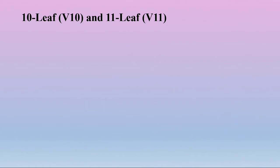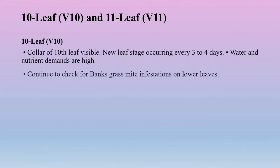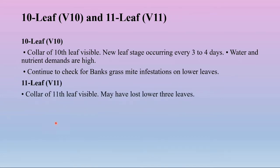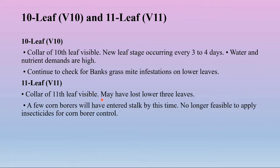In the tenth leaf stage (V10), the collar of the tenth leaf is visible and new leaf stages occur every three to four days. Water and nutrient requirements are high. Continue to check for bank grass mite infestations on the lower leaves. In the eleventh leaf stage (V11), the collar of the eleventh leaf is visible; the plant may have lost the lower three leaves and a few corn borers will have entered the stalk. It is no longer feasible to apply insecticides for corn borer control.